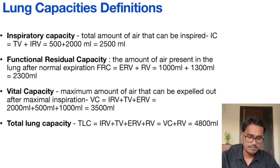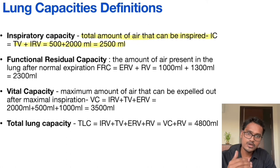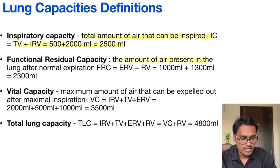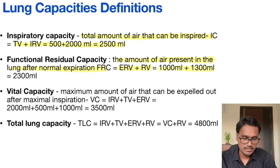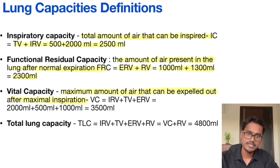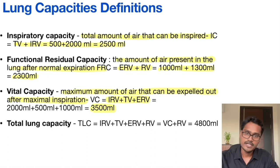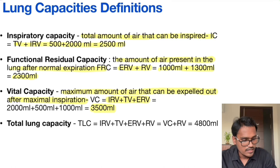Now the definitions with values. Inspiratory capacity is tidal volume plus inspiratory reserve volume, which equals 2500 ml. Functional residual capacity is ERV plus RV, which is 1000 ml plus 1300 ml, giving us 2300 ml. Vital capacity is the maximum amount of air expelled after maximal inspiration — maximum inspiration followed by maximum expiration — and it includes IRV plus tidal volume plus ERV, totaling 3500 ml. Adding residual volume to this gives total lung capacity, which is around 4800 ml.